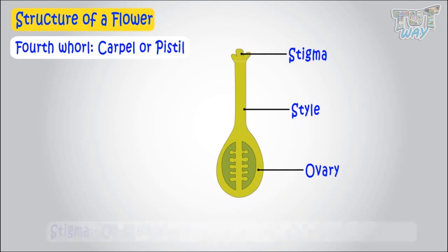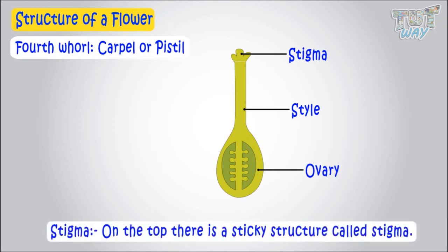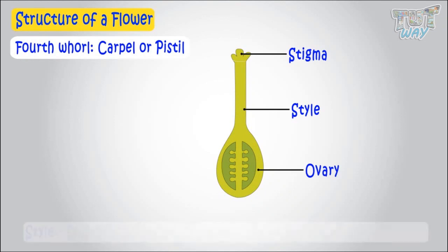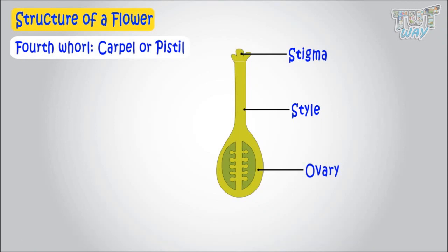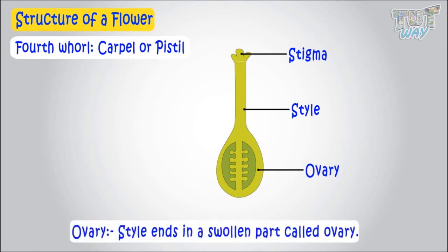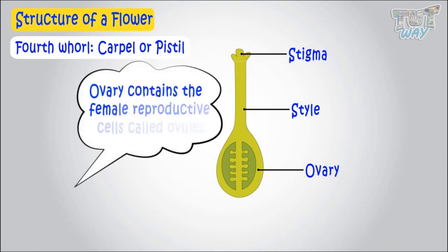On the top, there is a sticky structure called stigma. And this stigma is attached to a long tube-like structure called style. And this style ends in a swollen part called ovary. And this ovary contains the female reproductive cells called ovules.